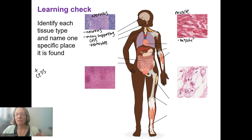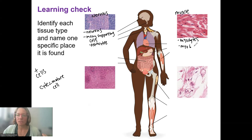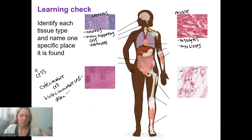Myocytes is the name for the main cell type in muscles. Myo refers to muscle. And I'll define this: '-cyte' refers to a mature cell. So there would actually be something called myoblasts, which are immature muscle cells. Immature cells are often producing — we'll come back to those.